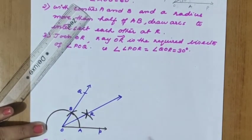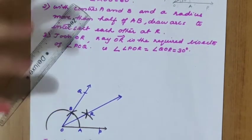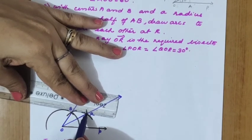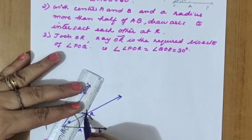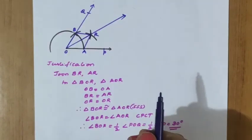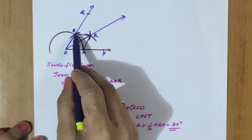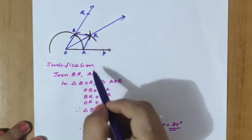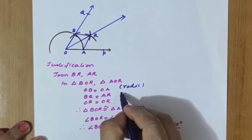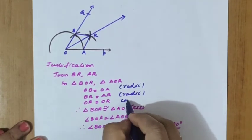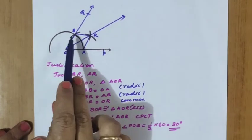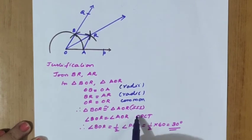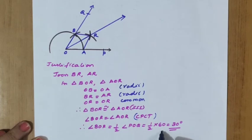We mark the intersection as R. For the justification, join BR and AR. We get two triangles: BOR and AOR. OB equals OA — these are the first radii. BR equals AR — the second radii. OR is common. By SSS criteria, the two triangles are congruent, so angle BOR equals angle AOR by CPCT. The total angle is 60 degrees, so each half equals 30 degrees. We have got the 30 degree construction.